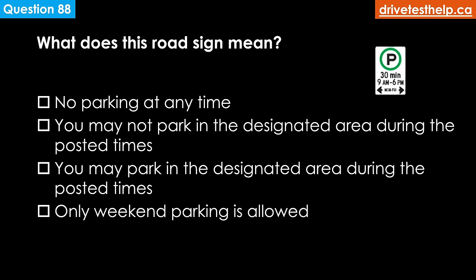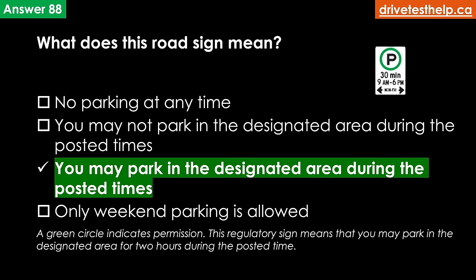What does this road sign mean? Options: no parking at any time; you may not park in the designated area during the posted times; you may park in the designated area during the posted times; only weekend parking is allowed. The correct answer is you may park in the designated area during the posted times. A green circle indicates permission.